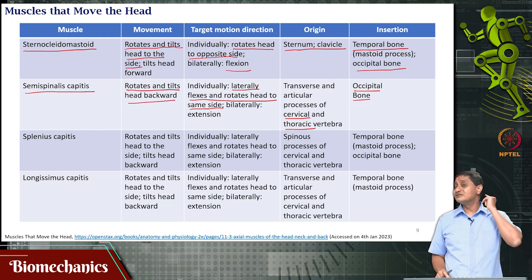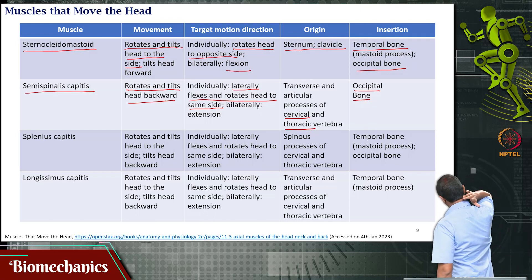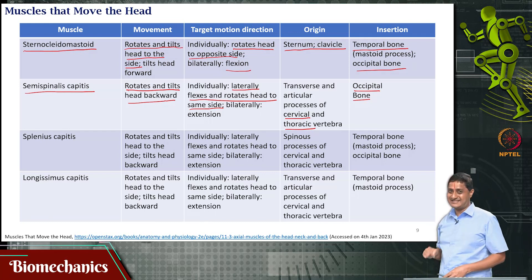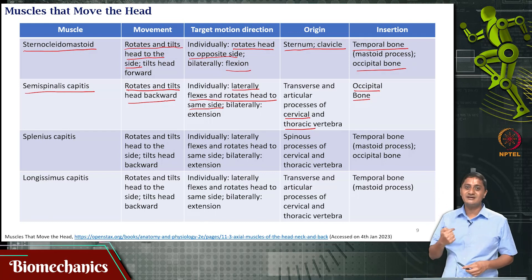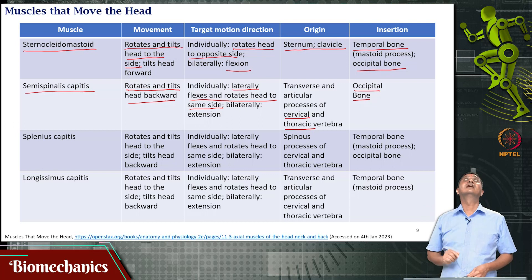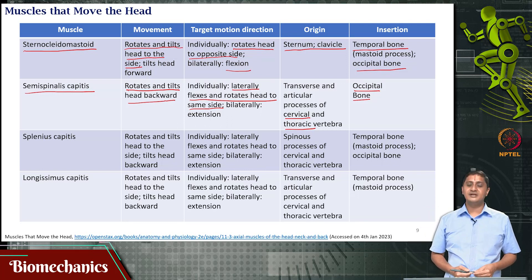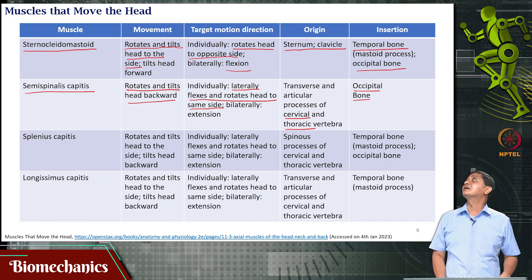When only one semispinalis capitis is active, its function is to laterally flex and rotate the head to the same side. The overall function of this muscle is to rotate and tilt the head backwards. When that muscle is contracting, you perform that backward tilting and rotating action.